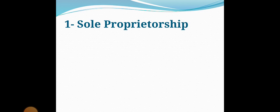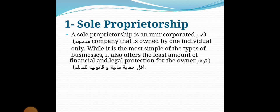The first type is sole proprietorship. A sole proprietorship is an unincorporated company that is owned by one individual only. While it is the most simple of the types of businesses, it also offers the least amount of financial and legal protection for the owner.